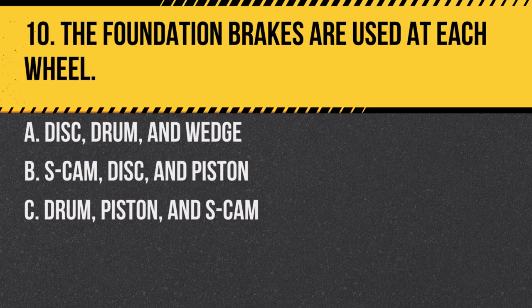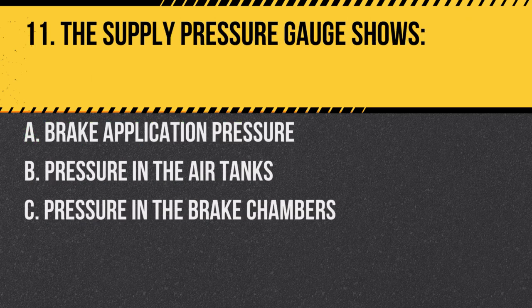Question 10. The foundation brakes are used at each wheel. The three types of foundation brakes are: A. Disc, drum, and wedge. B. S-cam, disc, and piston. C. Drum, piston, and S-cam. Answer A. Disc, drum, and wedge. These are the primary types of foundation brakes.